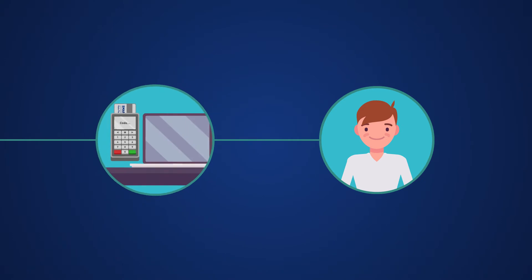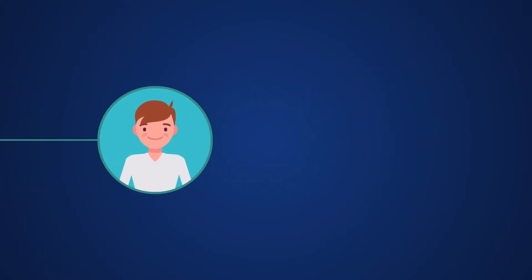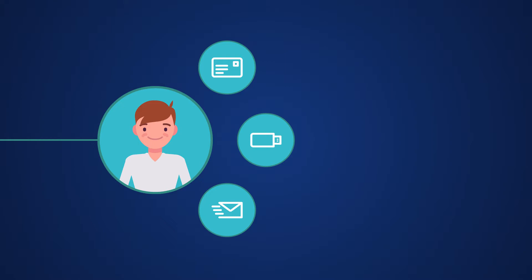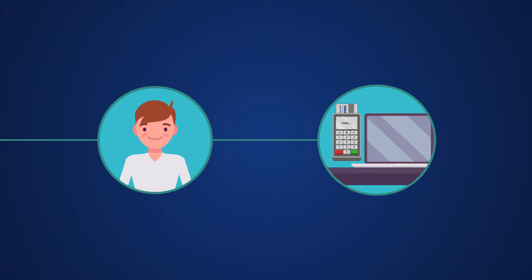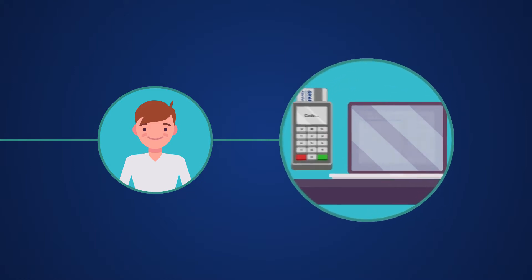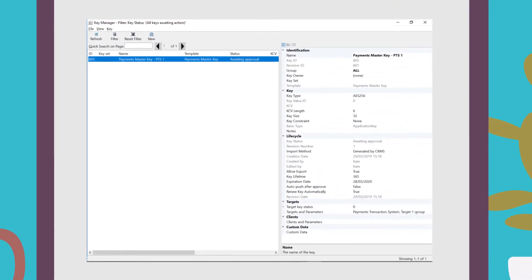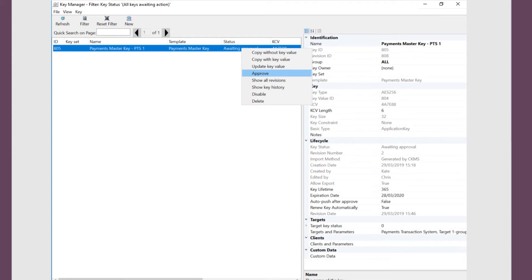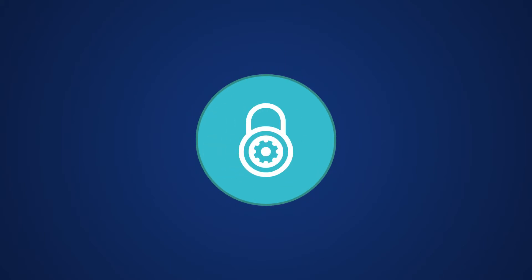Chris can log on separately to approve the generation of the key and confirm it's ready to be pushed to the application. If the key was distributed manually, it would need to be sent as separate components using different channels. By automating the process and encrypting the key, CKMS can distribute it in one piece, making the process simpler and faster. The newly generated key has been set up so it can only be sent to and used by the specified business application. Chris selects the key from the list and simply clicks push on the drop-down menu to distribute it. The key is encrypted and is automatically and securely distributed to the intended application.